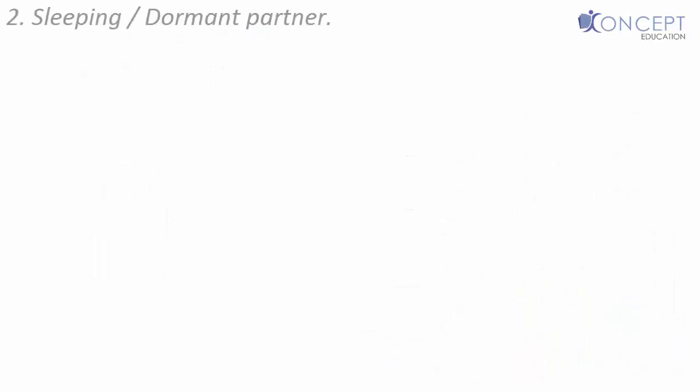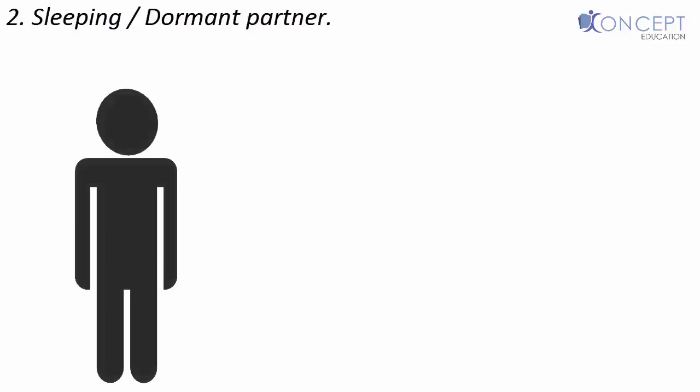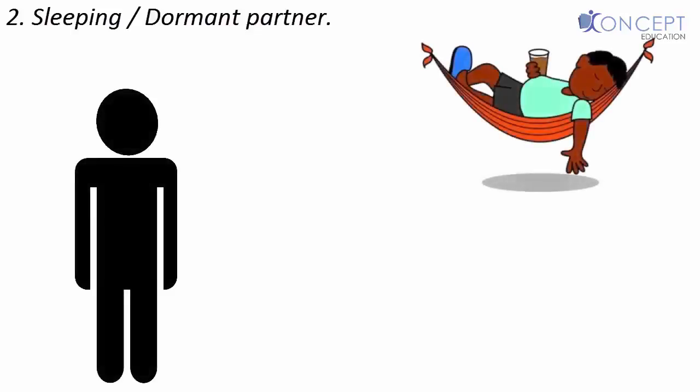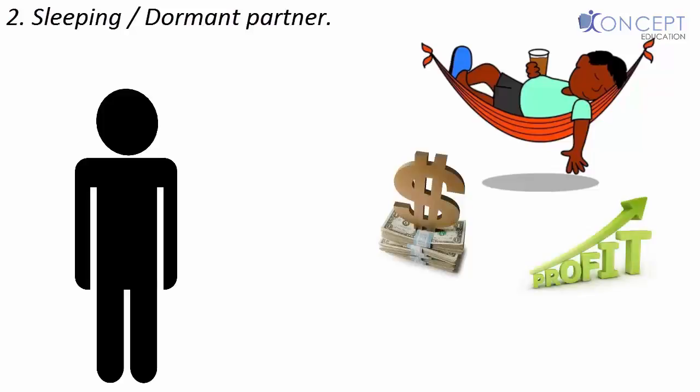The second is the sleeping or dormant partner. He is a person who does not take active part in the conduct of the business, but like every other partner invests capital and shares the profit of the business.